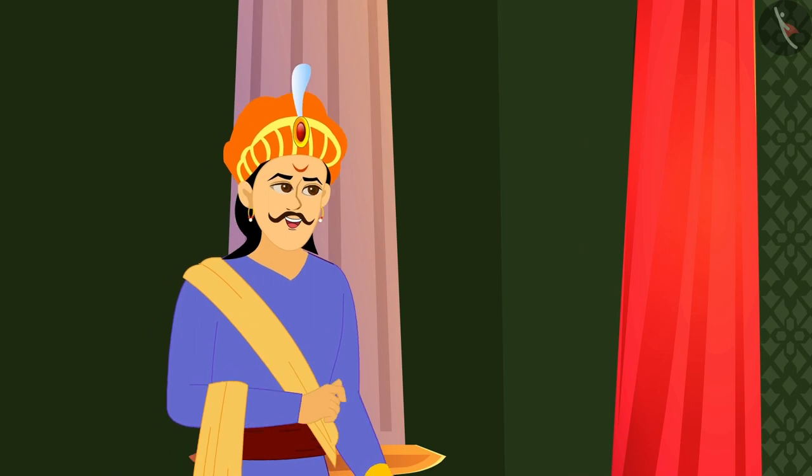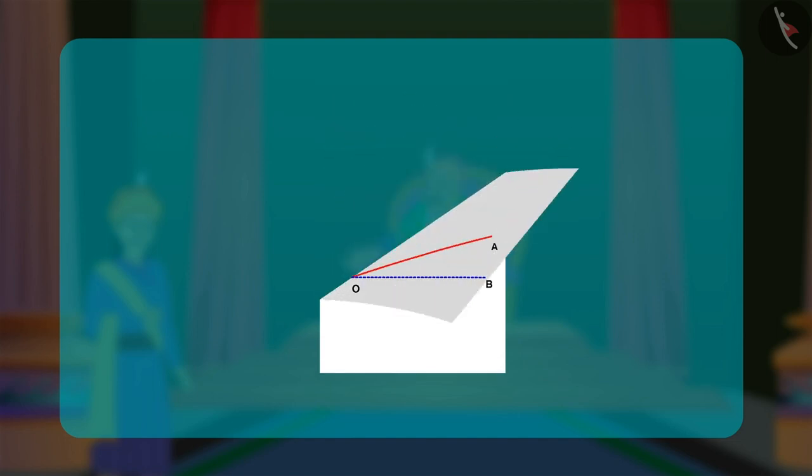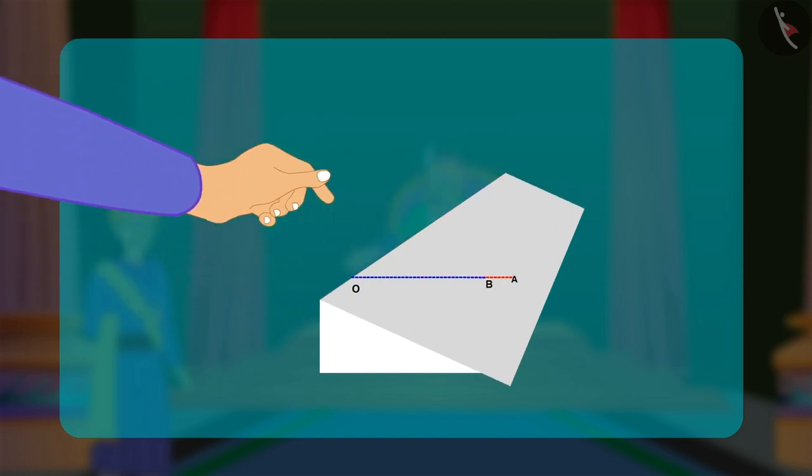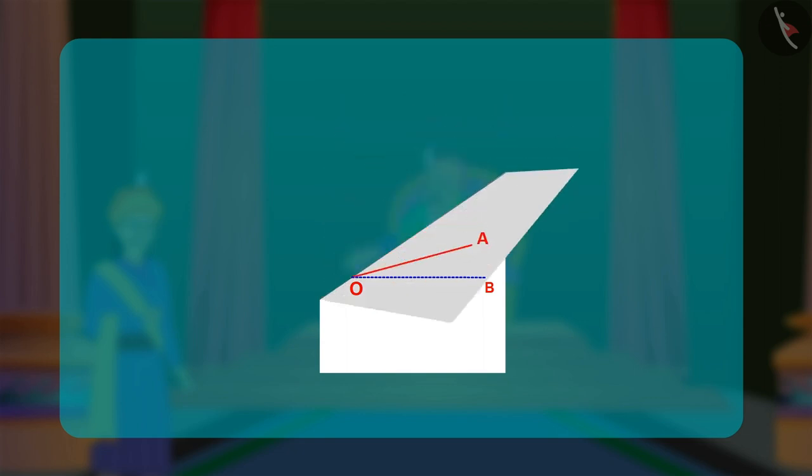Birbal smiled and said, It's so simple, sir. Birbal took a piece of paper and showed Akbar the angle AOB. He then folded and creased the paper in such a way that the legs OA and OB of the given angle AOB coincided with each other.